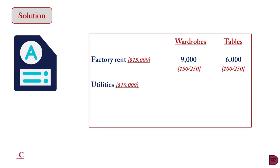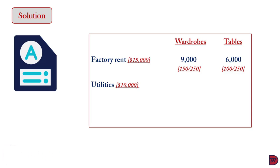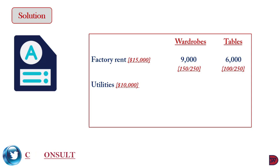For utilities, the total cost is $10,000. The appropriate driver is labor hours, because the more labor spent working, the more utilities are incurred. Wardrobes have 500 hours and tables have 300, totaling 800. So for wardrobes: 500 divided by 800 multiplied by $10,000 gives $6,250. For tables: 300 divided by 800 multiplied by $10,000 gives $3,750.